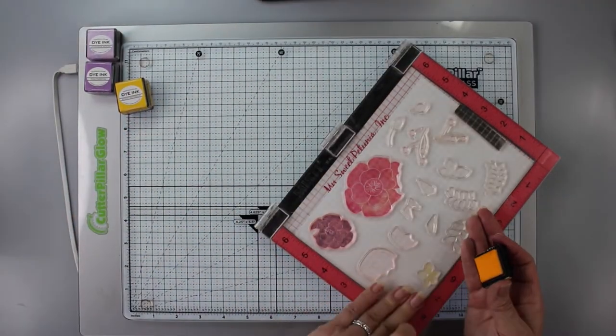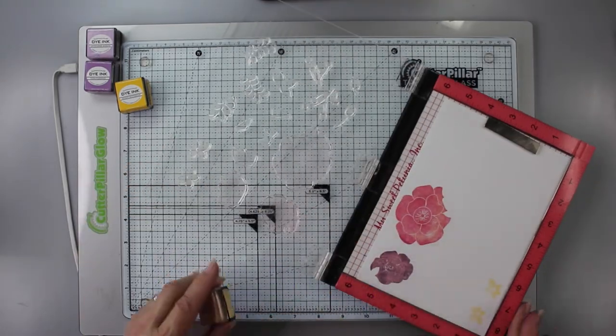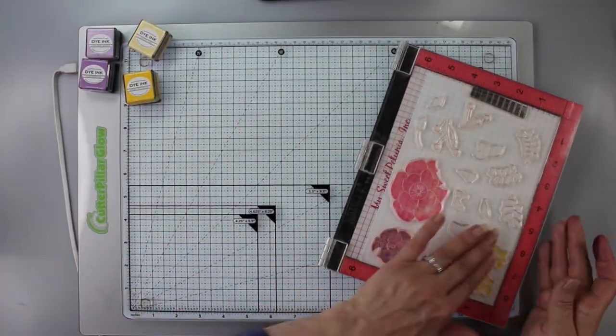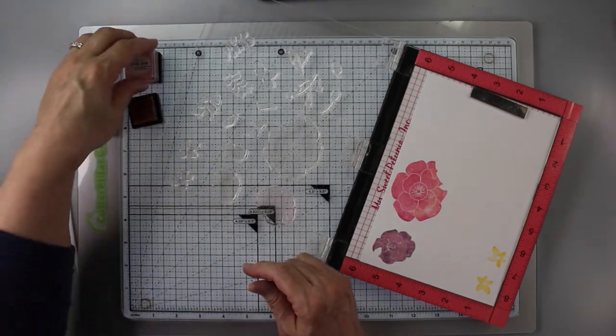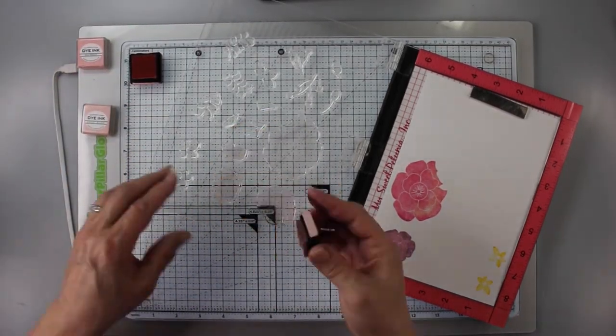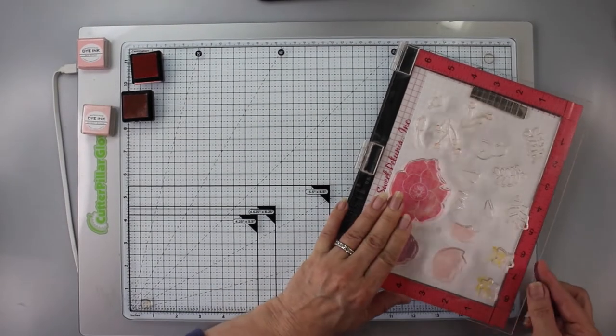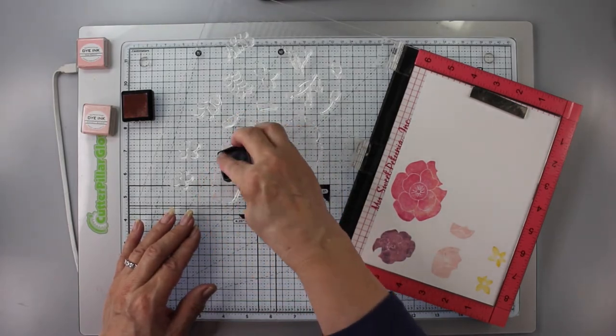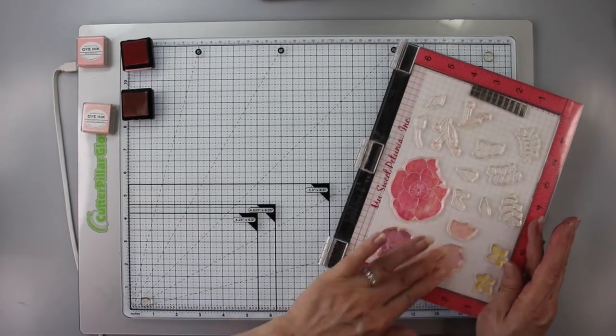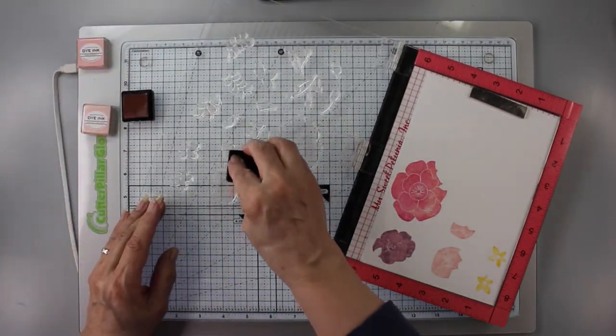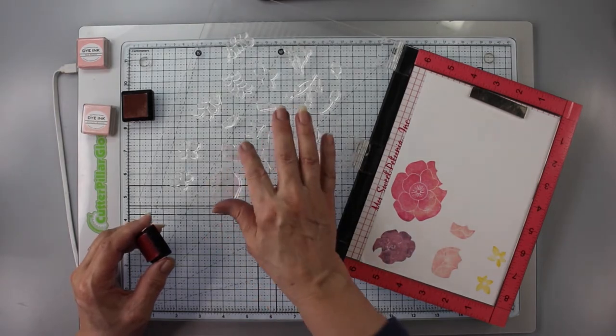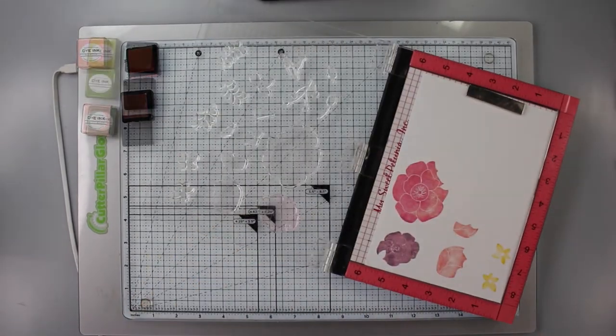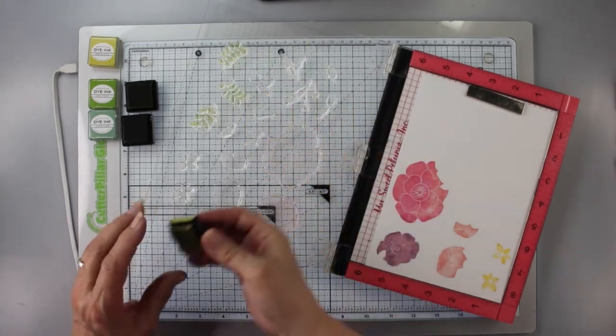So I'm going to go on to stamping those little star flowers. I'm using for the star flowers Sweet Blush and Pale Peony. Oh, I'm sorry. I misspoke. I'm not using those. I am using Lemon Tart and Bright Buttercup. Sorry about that. That's why you need to go to the end of the video and see the colors. And then now I'm doing these tulips. Now these are Sweet Blush and Pale Peony. And they just give a really nice look and dimension to these flowers.